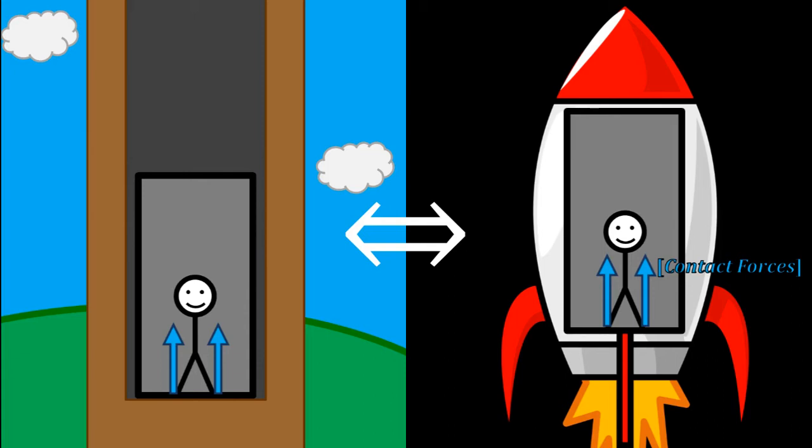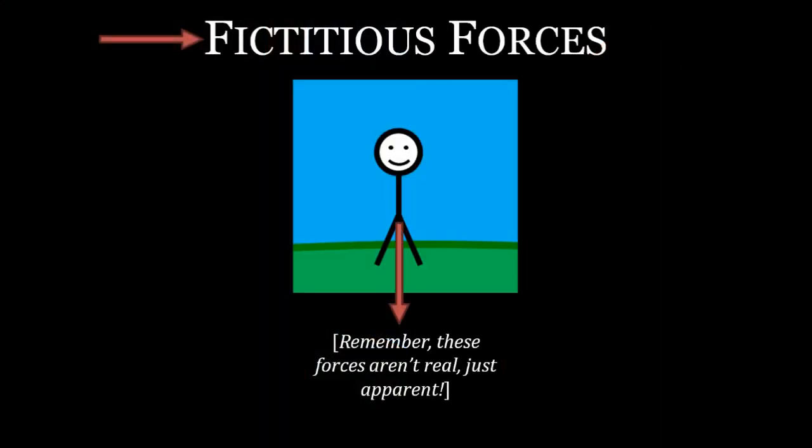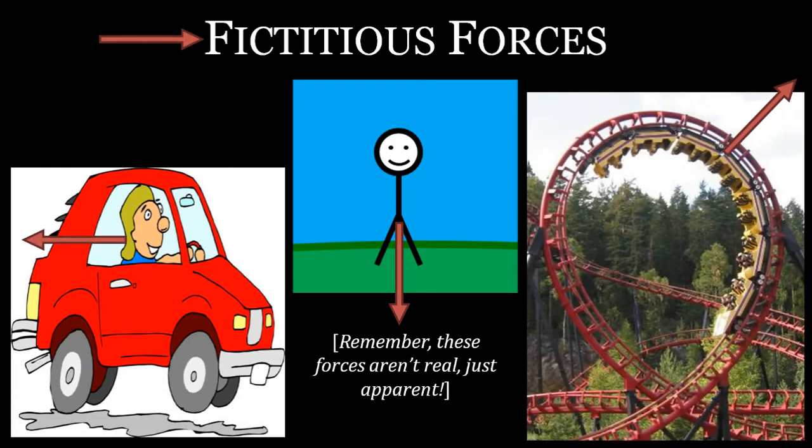These two thought experiments led Einstein to classify gravity as a so-called fictitious force, along with the inertial force that pushes you back in an accelerating car, or the centrifugal force that throws you towards the outside of a rollercoaster loop. Fictitious forces are not caused by two objects interacting, but are rather a consequence of being accelerated.